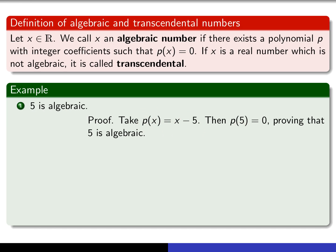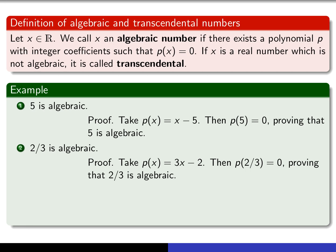A similar proof will show you that any integer is an algebraic number. Here's another example: see if you can prove that 2/3 is an algebraic number. We have to produce a polynomial having integer coefficients such that p(2/3) = 0. If we take p(x) = 3x − 2, the coefficients 3 and −2 are all integers, and when you replace x by 2/3 you get 0. So that shows that 2/3 is algebraic. A similar argument will show that any rational number is algebraic.